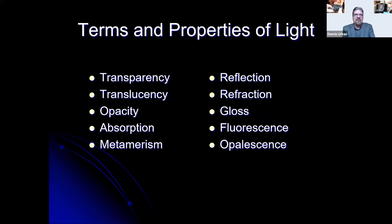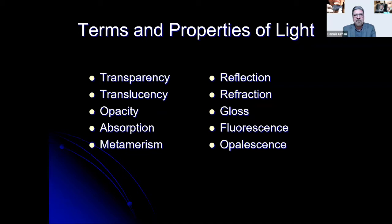Let's look at the terms and properties of light. We have transparency, translucency, opacity, absorption, metamorism, reflection, refraction, gloss, fluorescence, and opalescence. We take all these terms into consideration when building restorations in the laboratory, especially anterior restorations with porcelain.